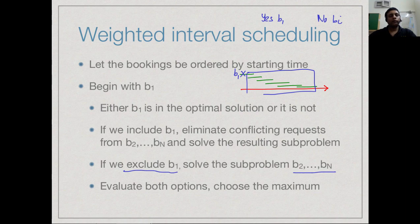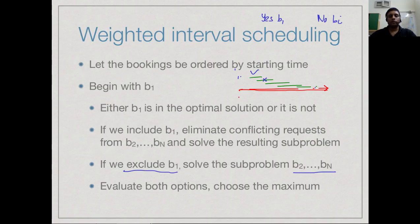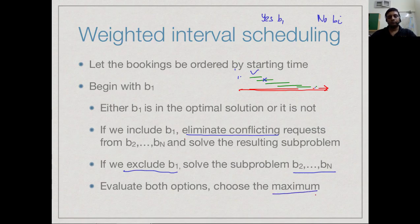On the other hand if we include b1, we have to rule out all conflicting requests as in the greedy case, and then we have another sub-problem which is some subset of b2 to bn. We have taken both options — included b1 and excluded b1. The solution either has b1 or does not have b1; there is no third option. We evaluate both and then choose the best one — this is an inductive decomposition into two sub-cases.